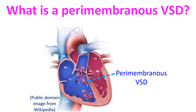Perimembranous VSD is the commonest type of ventricular septal defect. When there is a ventricular septal defect, blood shunts from the left ventricle to the right ventricle as the pressure in the left ventricle is higher. This leads to increased pulmonary blood flow.